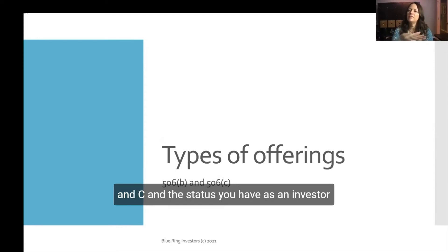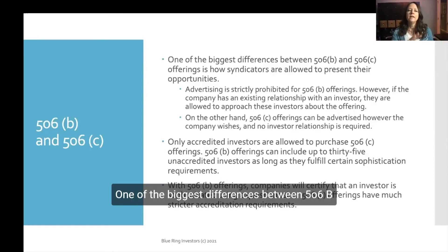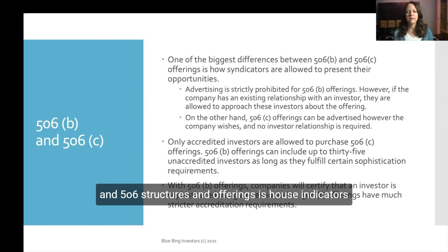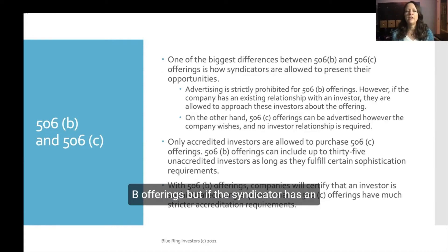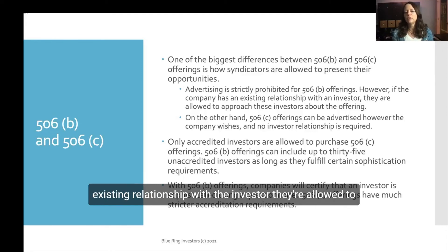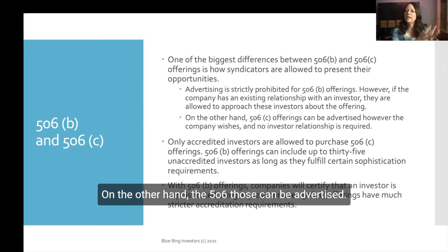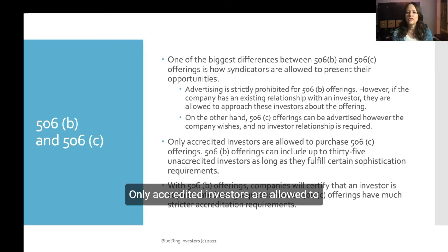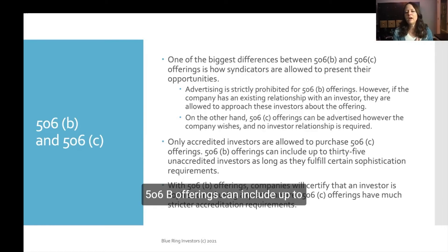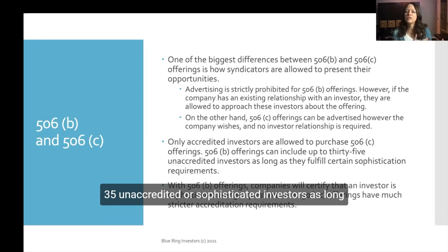Let's look at types of offerings. The two main categories are 506b and 506c, and your investor status determines which ones you have access to. One of the biggest differences between 506b and 506c offerings is how syndicators are allowed to present their opportunities. Advertising is strictly prohibited with 506b offerings, but if the syndicator has an existing relationship with the investor they're allowed to approach them about the offering. On the other hand, 506c offerings can be advertised — on Facebook and other channels — with no prior investor relationship required.